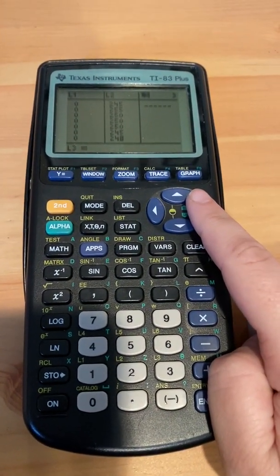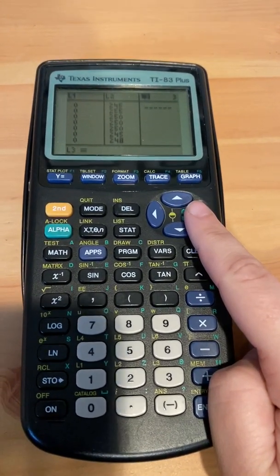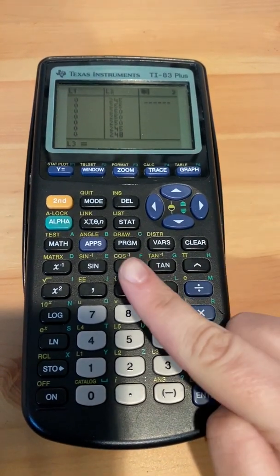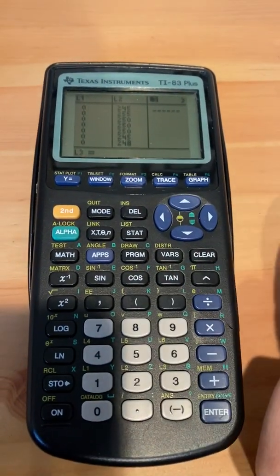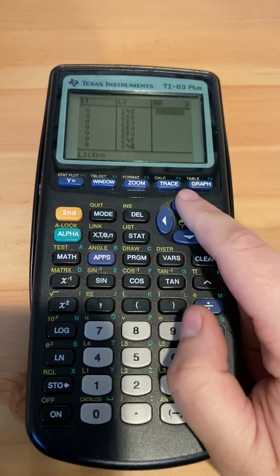And so we're going to figure out what the residual amount will be. So on the calculator, what we can do is before we even find out the predicted, we can find out the residual, and this is how we do it. Make sure that you have L3 highlighted.